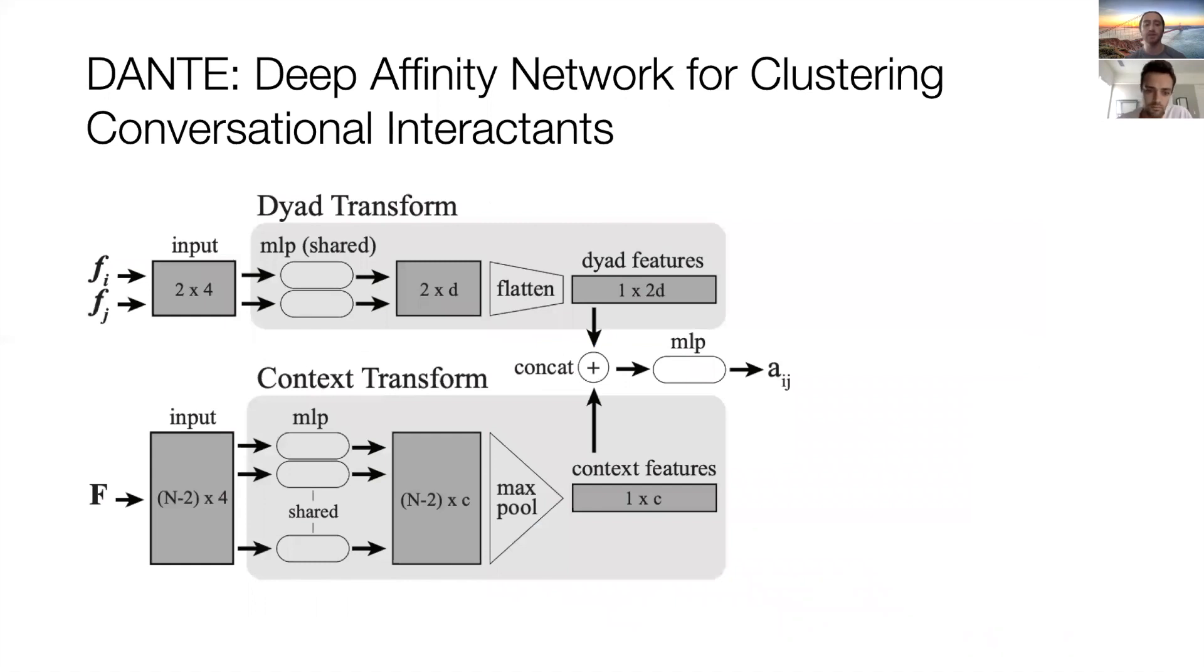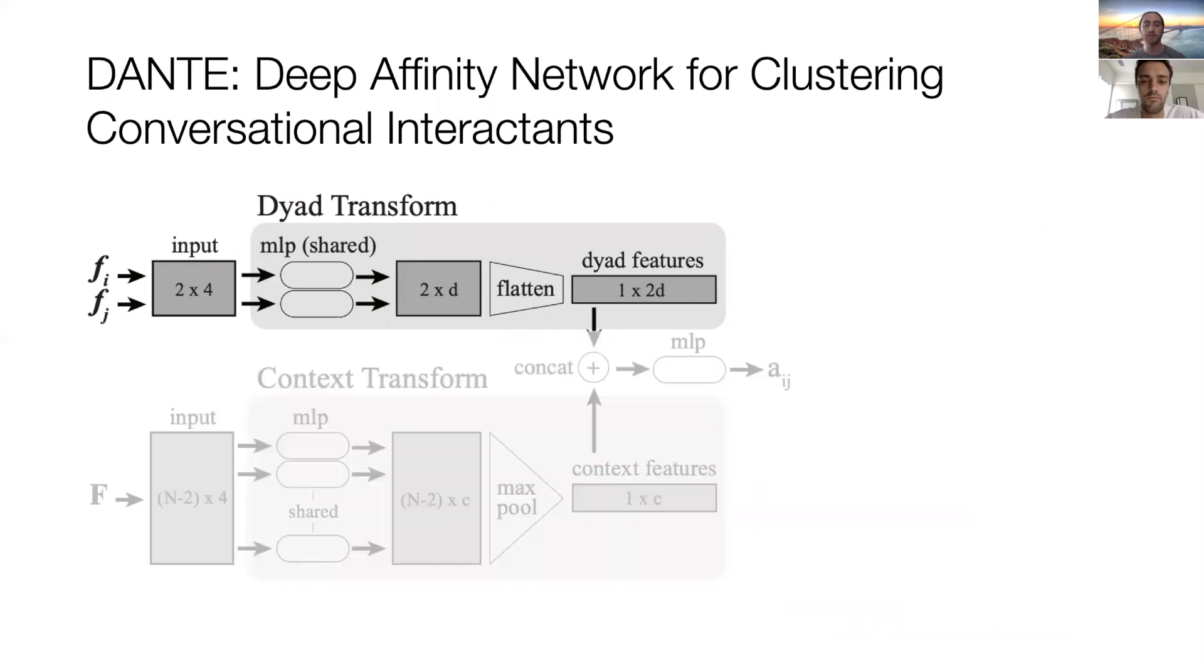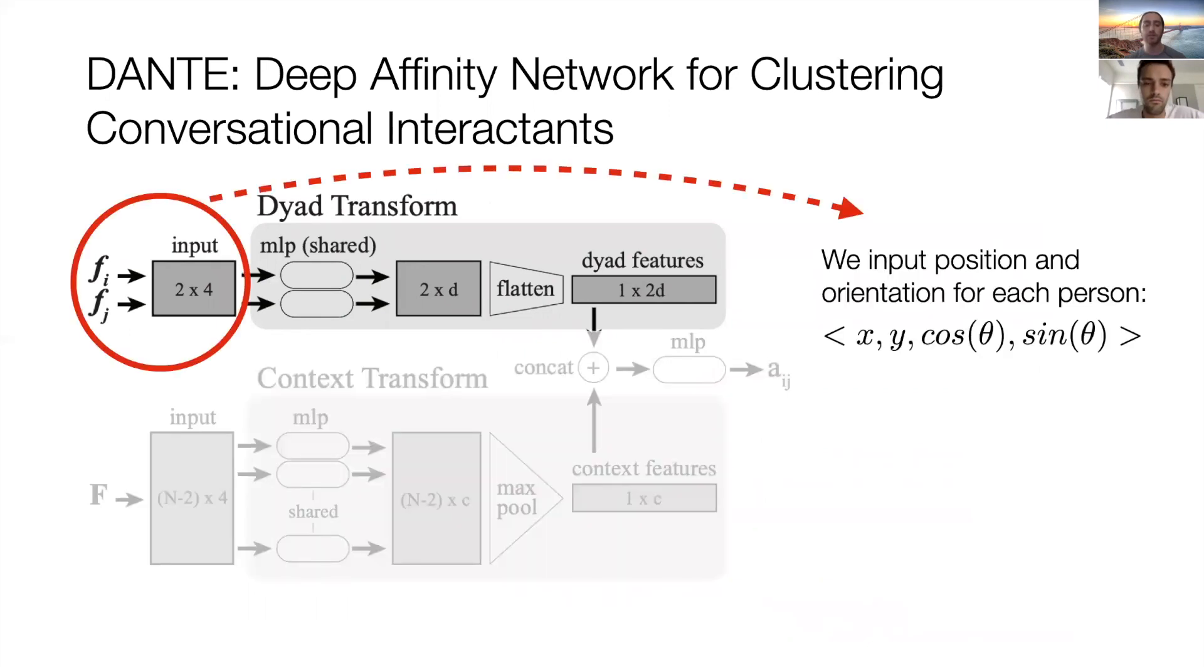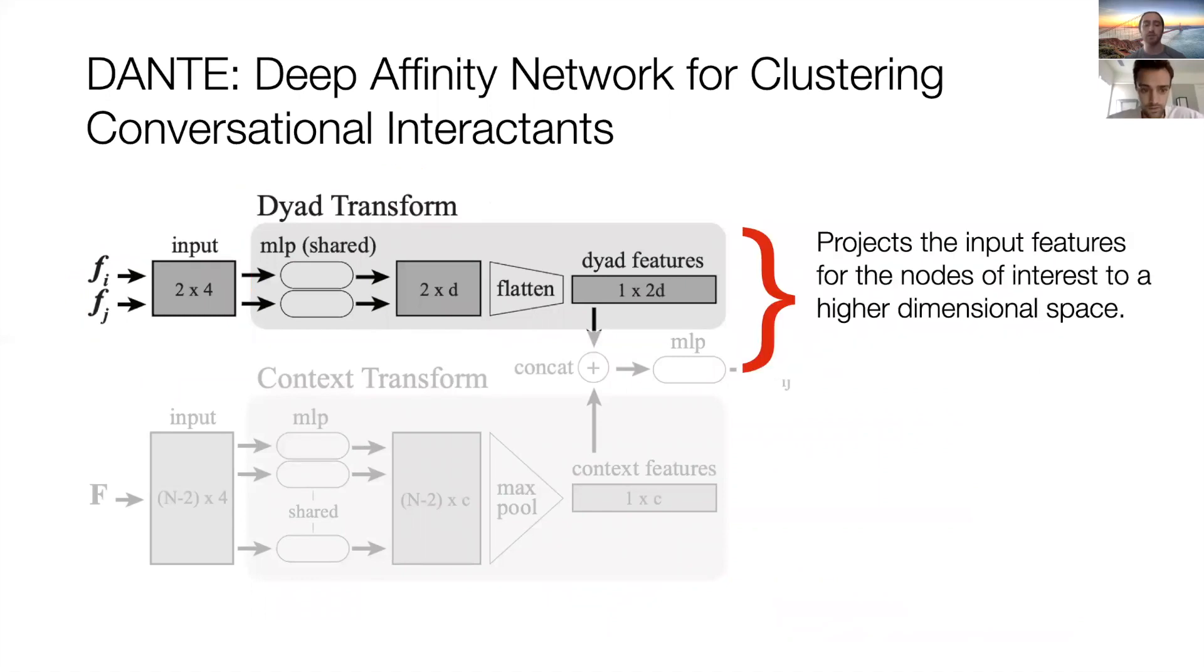Zooming in, Dante is composed of a dyad transform, a context transform, and a multilayer perceptron. Now, we will go through how these pieces fit together in the context of predicting affinity ij. We start with the dyad transform, which takes features from our dyad of interest as input. The dyad transform uses a multilayer perceptron to find a high-dimensional encoding of the inputs.